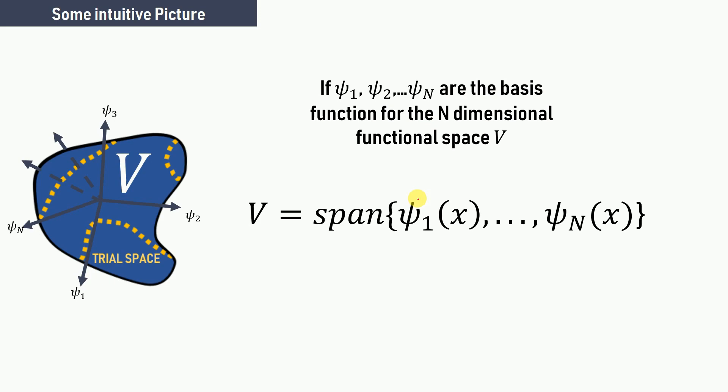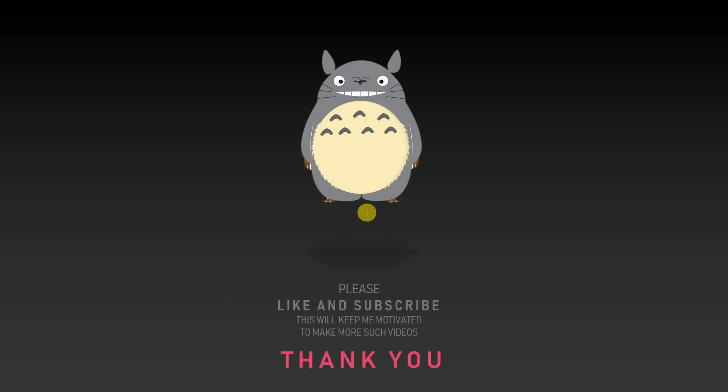In this video we discussed what an approximate solution is, what finite-dimensional spaces are, what trial spaces are, and what basis functions are, and we discussed how to construct an approximate solution. In the next video we are going to study several methods that will help us find this trial solution — we have already chosen the ψ_j's, and what remains is the calculation of the coefficients c_j's. Thank you for your time.